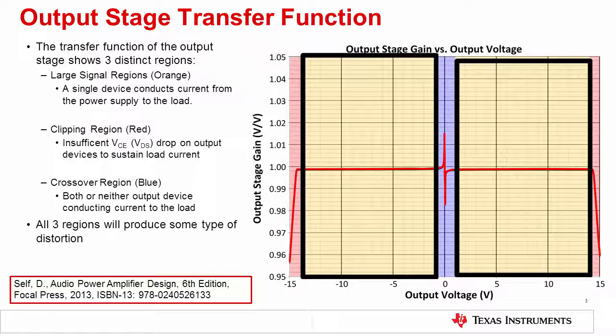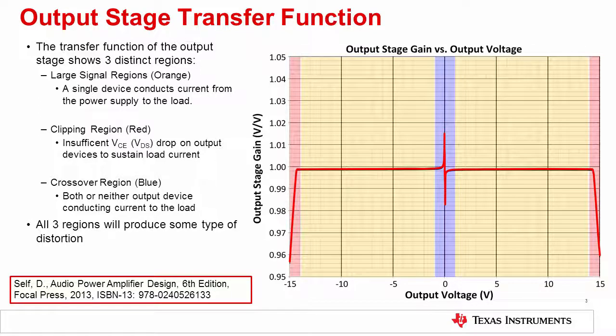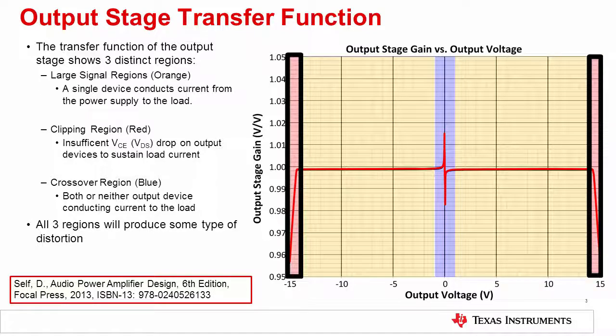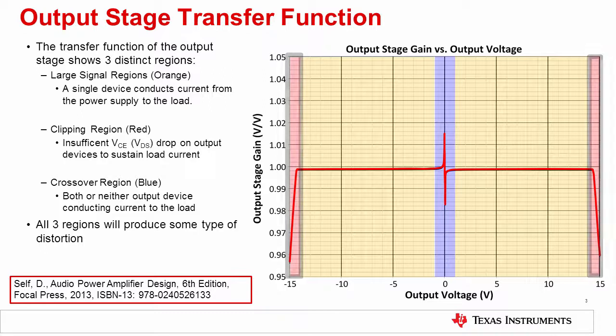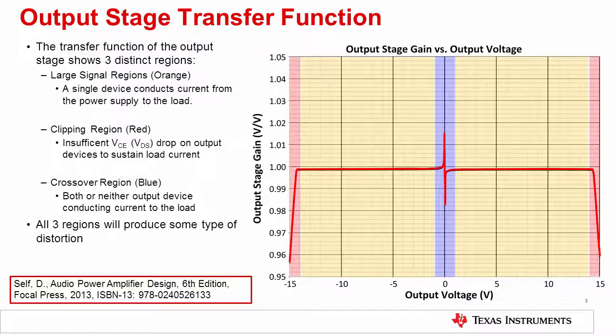First are the large signal regions shown in orange. In each of the orange regions, only a single device, either the top transistor or the bottom transistor, conducts current to the load. The next region is the region near either supply and is shown in red. This is the clipping region. In this region, there is insufficient collector-to-emitter voltage to sustain the load current. We can see that the output stage gain starts to decrease in the clipping region. The last region is called the crossover region and is shown in blue. In this region, either both or temporarily neither of the output transistors are conducting current to the load. We can see that this creates a discontinuity in the gain of the output stage near the zero crossing point. All three of these regions create some form of distortion.